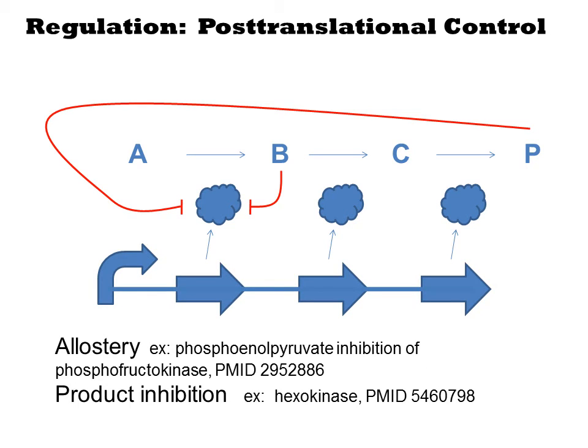The most challenging type of regulation is allostery and inhibition, generally referred to as post-translational control. Here, a metabolite binds to an enzyme and alters its reactivity. Many enzymes are product-inhibited, such as hexokinase, meaning that accumulation of the product will reduce its function. There are many examples of these post-translational control mechanisms in primary metabolism. Such behavior can only be modified through protein engineering — there is no easy fix here.